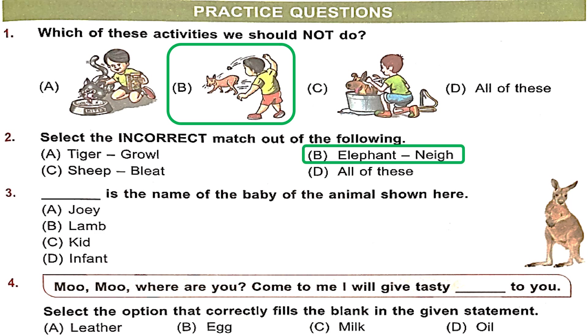Question 3: Dash is the name of the baby of the animal shown here. The animal shown in the given picture is a kangaroo, and the baby of a kangaroo is called Joey. Option A is the right answer.